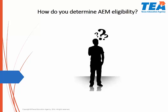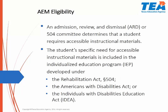How do you determine AEM eligibility? In order for a student to be eligible for accessible instructional materials, an admission review and dismissal, ARD, or a 504 committee must make the decision based on the student's specific need. The IEP or the 504 is developed under the Rehabilitation Act Section 504, the Americans with Disabilities Act, or the Individuals with Disabilities Education Act, IDEA.